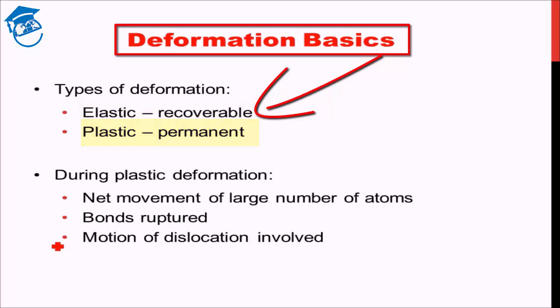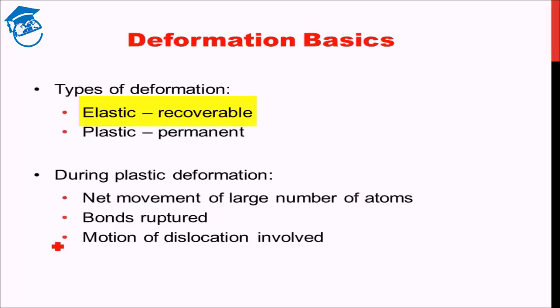As the name suggests, elastic deformation refers to recoverable deformation — that is, deformation which can be recovered back once the stress or the load is removed. Whereas plastic deformation is the deformation which is caused permanently; it cannot be recovered back. That is the basic difference between elastic and plastic deformation.